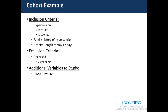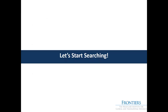Now we'll get started searching. I'll do an example cohort: patients with hypertension who have a family history of hypertension, who've been in the hospital for more than two days, excluding anyone who's passed away or is under 18. If you were doing a retrospective study you might also want to look at their blood pressure — I'll show you where to find that.